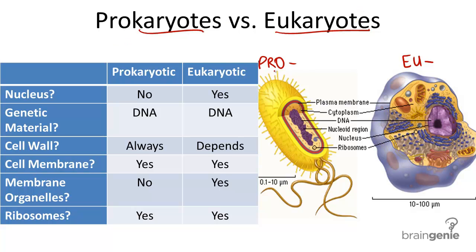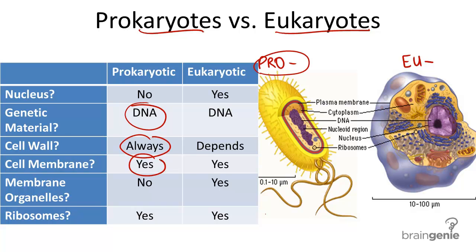First, prokaryotic cells are defined by the fact that they are one-celled simple organisms that lack a nuclear membrane and membrane-bound organelles. Prokaryotic cells have genetic material, a cell wall, a plasma or cell membrane, and ribosomes. But they lack a nucleus or membrane-bound organelles.